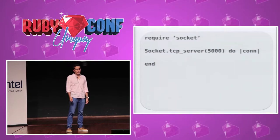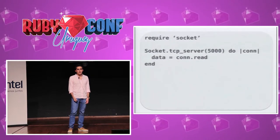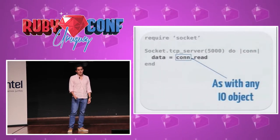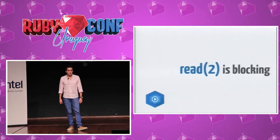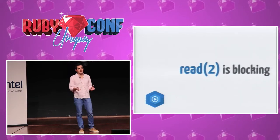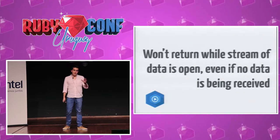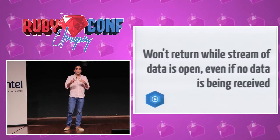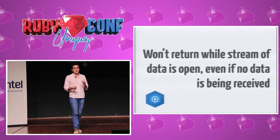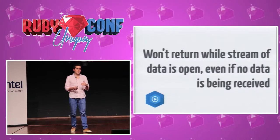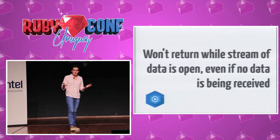How do we read? We create a TCPServer, get the connection, and call the read method just like any other IO method. We put the data and close the connection. The read is a system call that Ruby makes, and it's blocking — the code won't complete its execution and won't return control until the connection is closed. If we're reading data and the client doesn't close the connection, we are blocked.